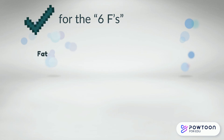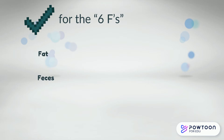We use this mnemonic, the six F's, for abdominal distension. The most common reasons for distension are because of fat, feces, fluid, fetus, fibroids, or flatus — otherwise known as gas.